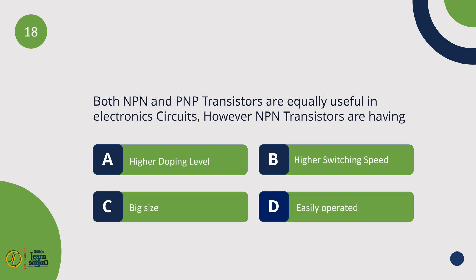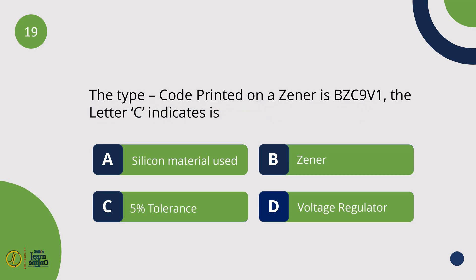Both NPN and PNP transistors are equally useful in electronic circuits. However, NPN transistors have higher switching speed. The type code printed on a component is BZC9V1 — the letter C indicates 5% tolerance.